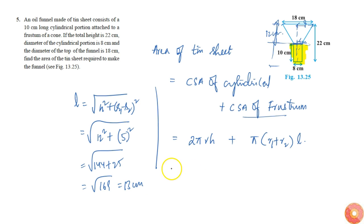Once these things are known, it's easy to find out this value. That will be 2 × (22/7) × 4 × 10 plus (22/7) × (9 + 4) × 13. This equals (22/7) × (r1 + r2) × 13, which is (22/7) × 13 × 13.